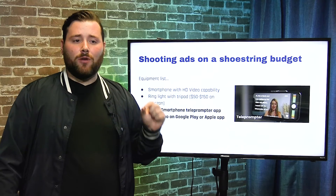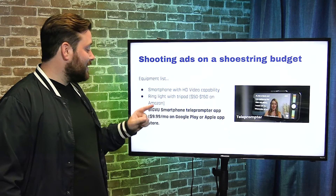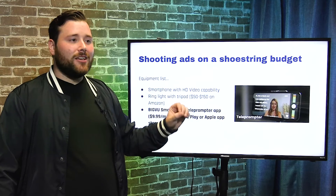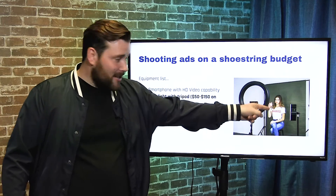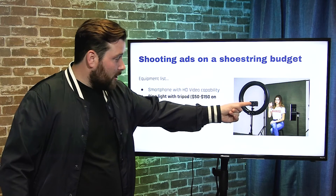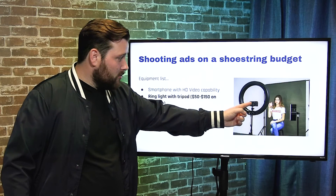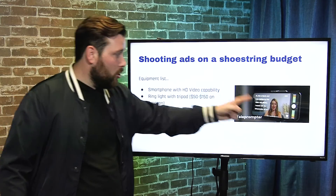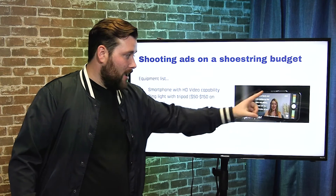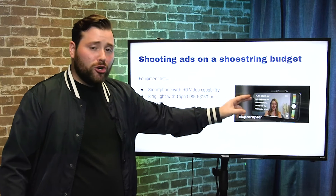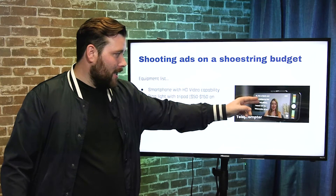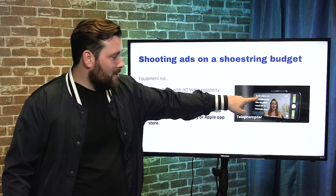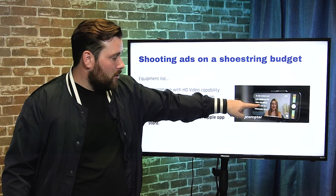Another amazing tool is the BigView smartphone teleprompter app — it costs $9.99 a month on Google Play or the Apple App Store. You've got your subject, your ring light, and your front-facing camera recording you. You load your script into the teleprompter app and you basically read along — you don't have to remember anything.